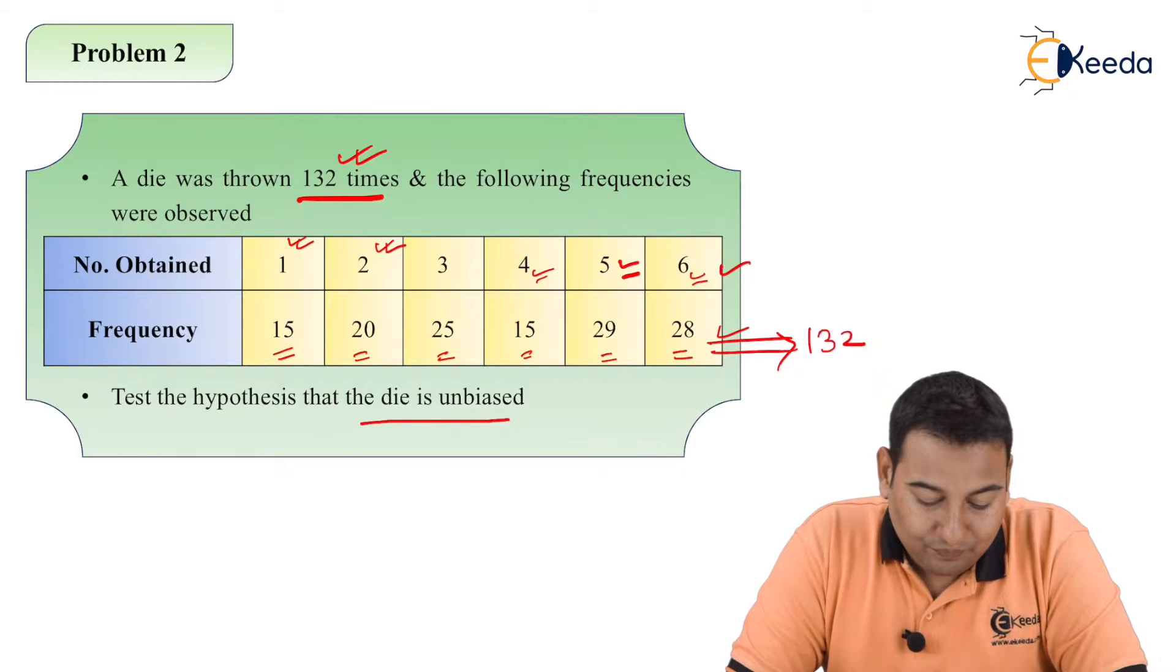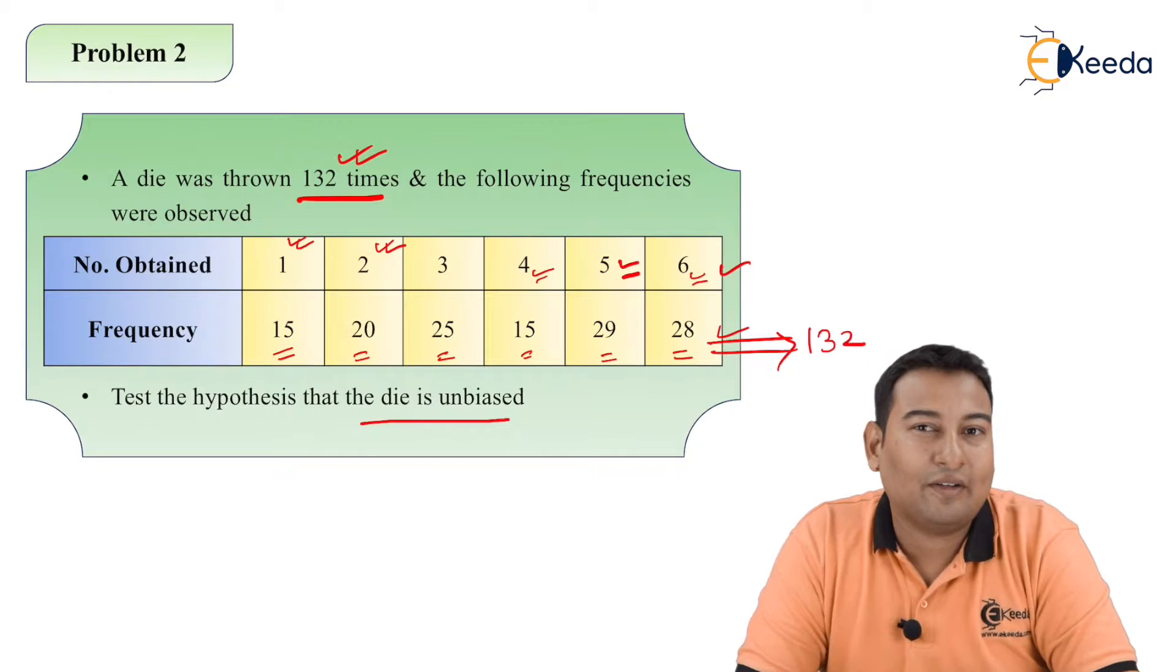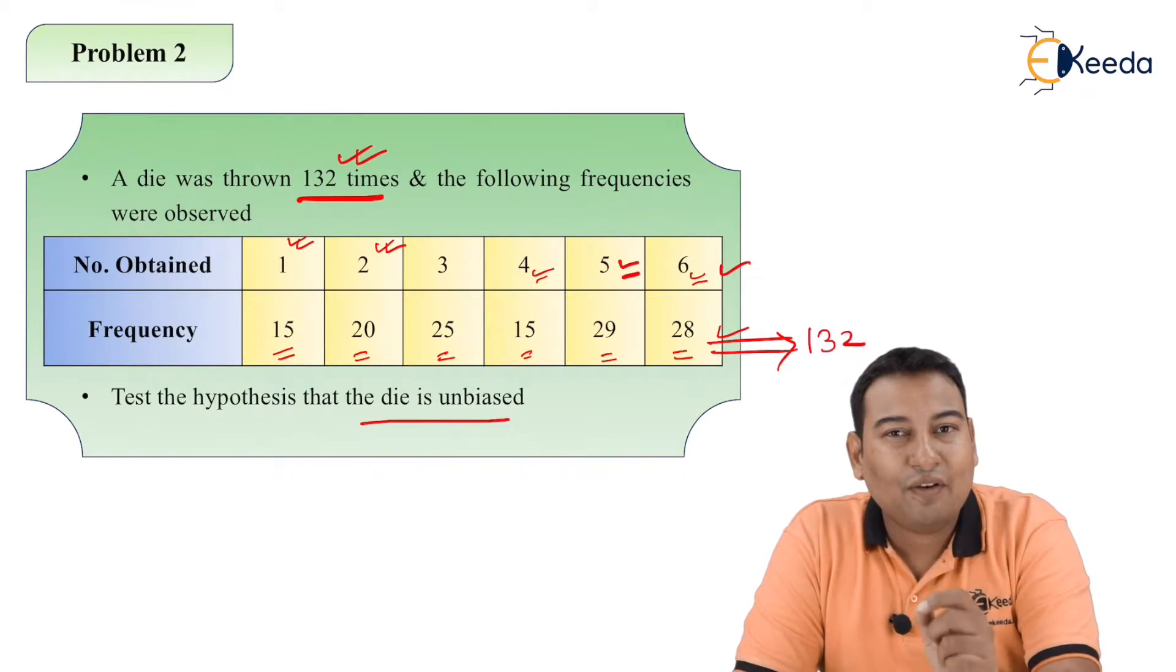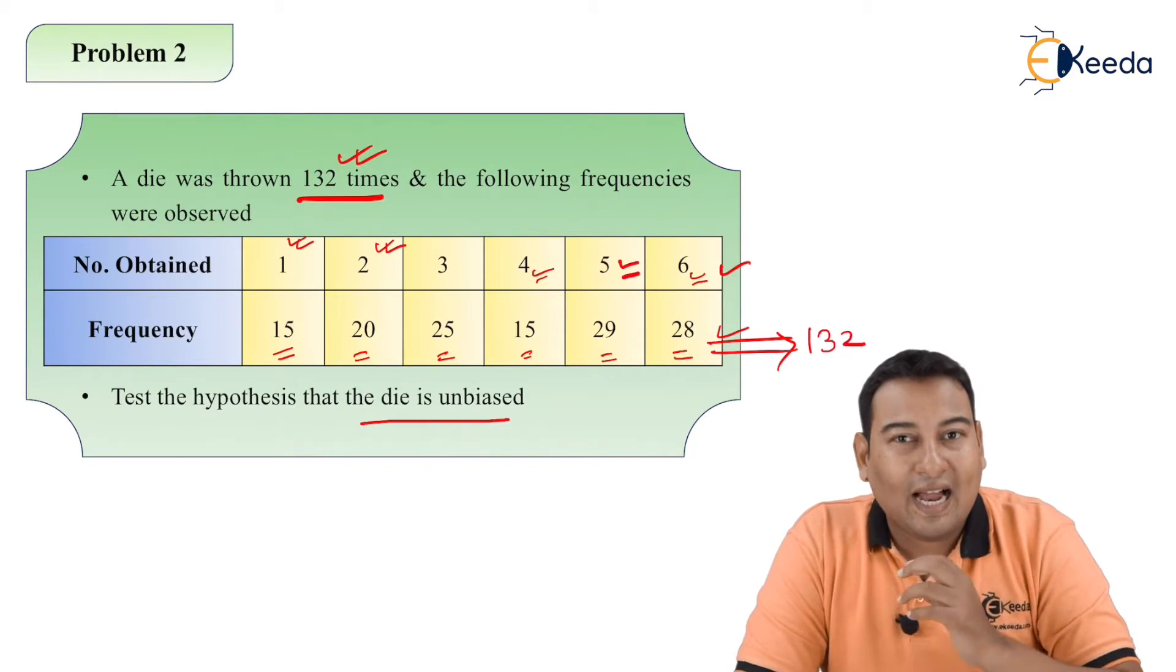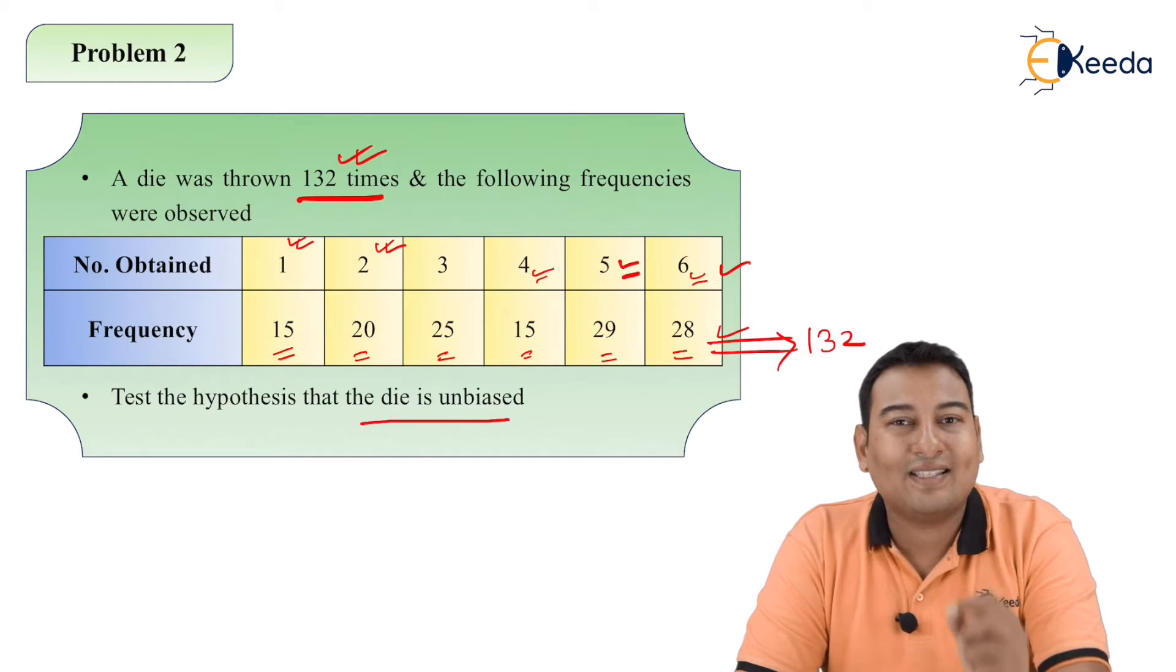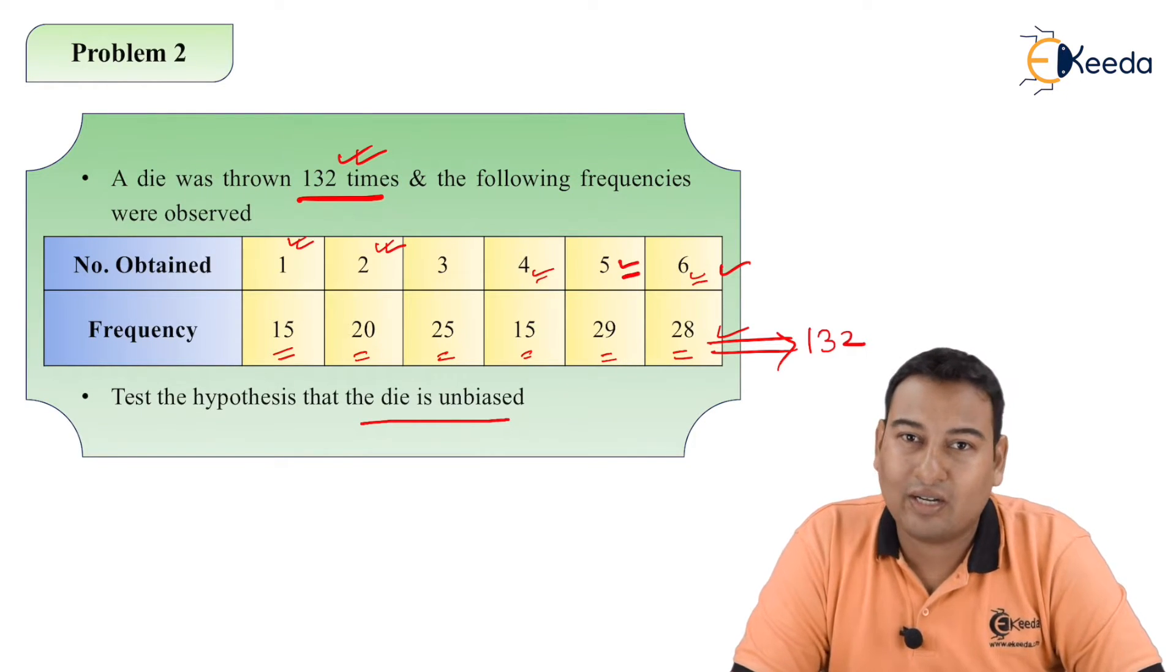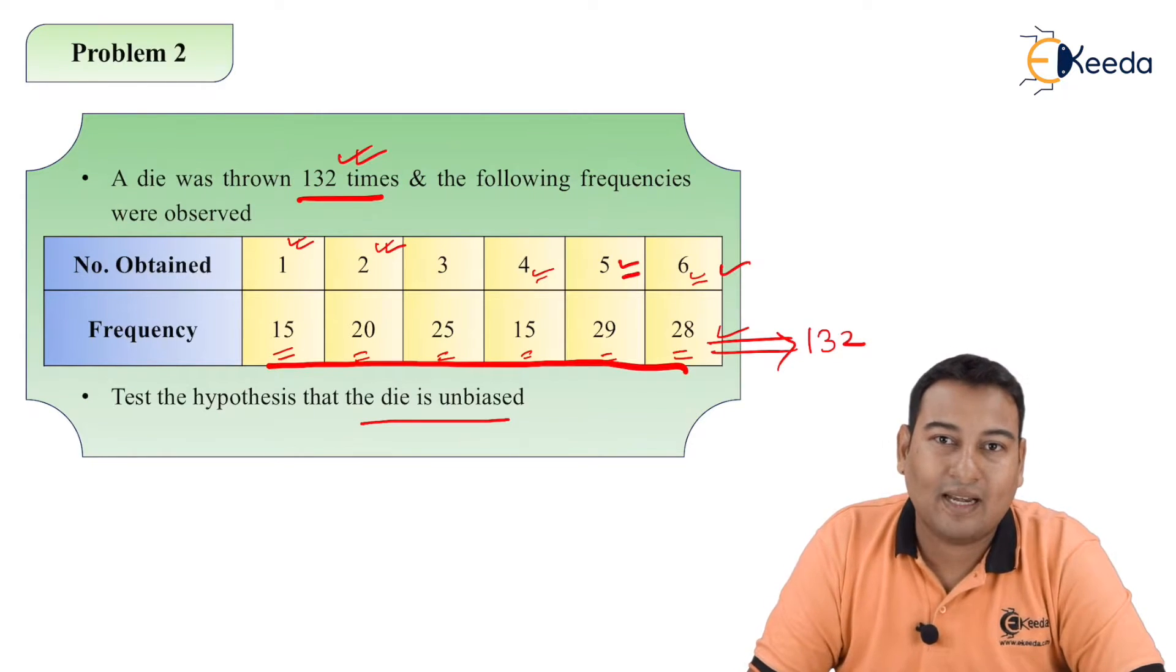Friends, what is my expectation? First of all, think what is the expectation. The expectation is that each and every number should appear equal number of times. Ideally, I am expecting that 1, 2, 3, 4, 5, and 6 all should appear equal number of times.